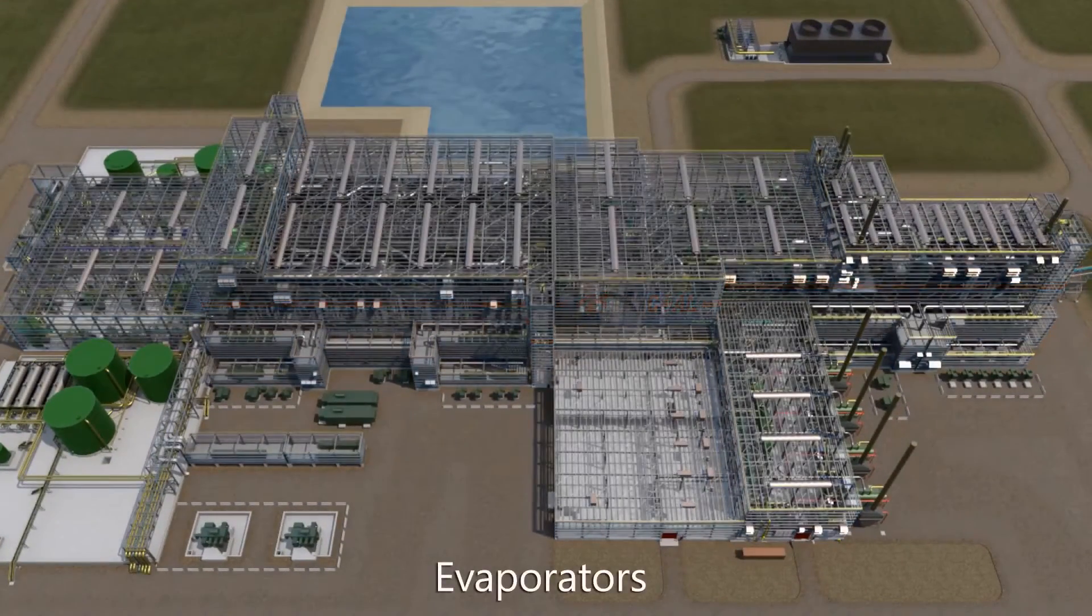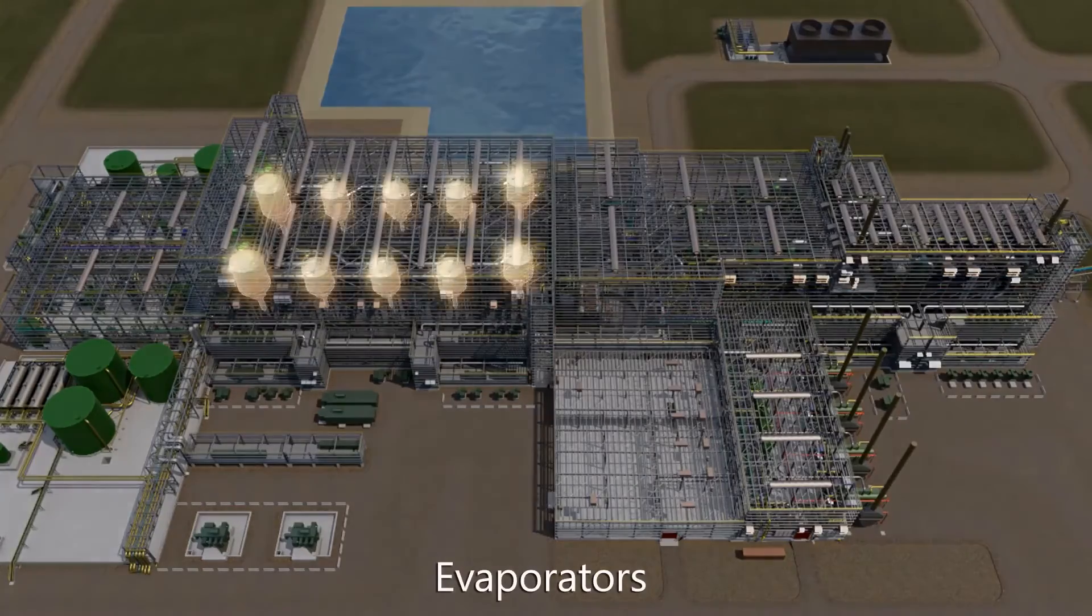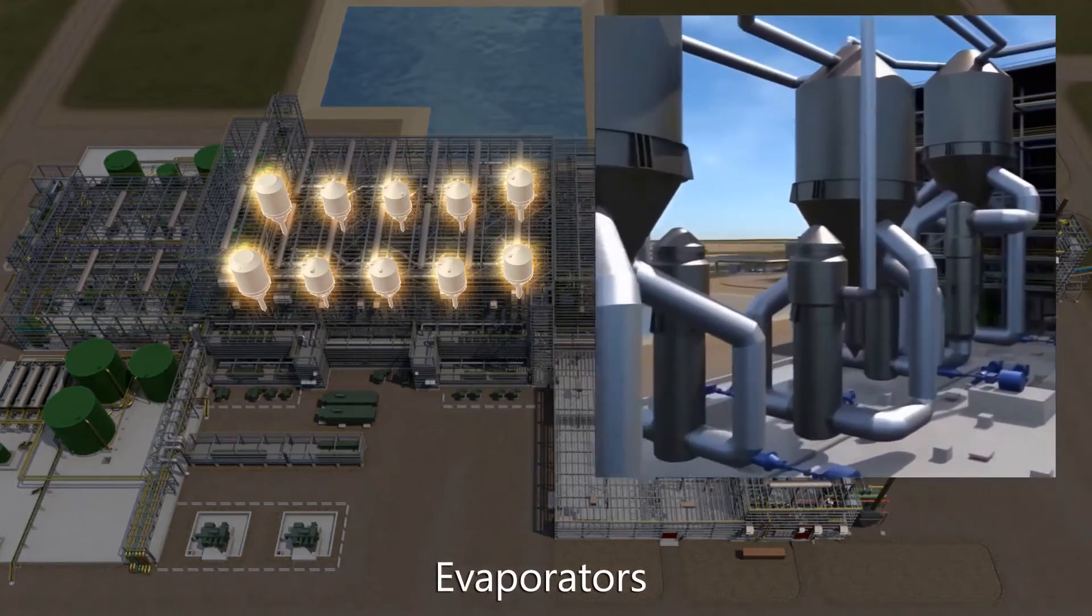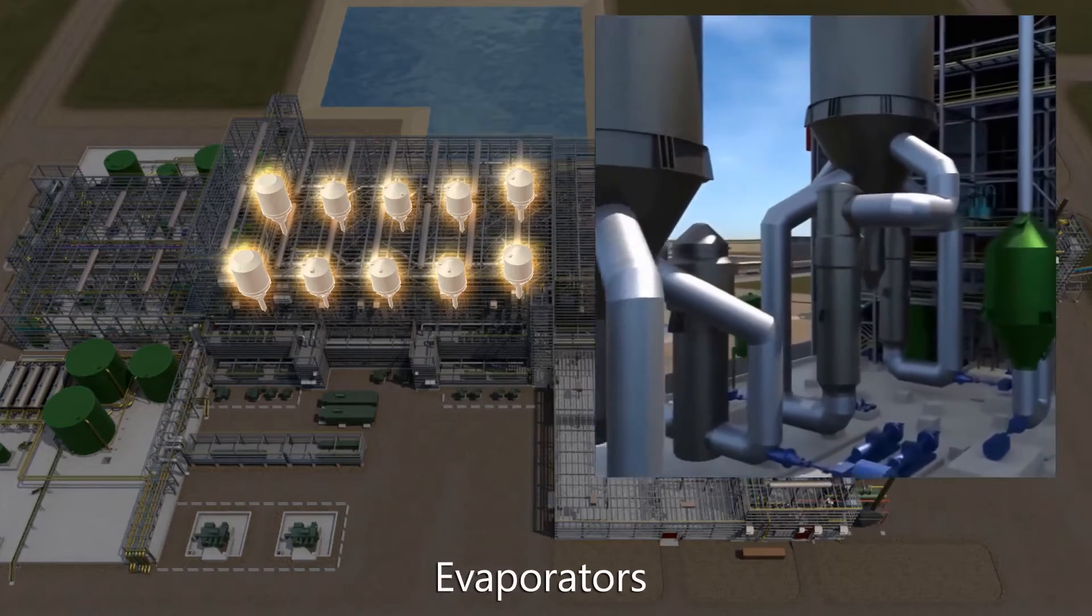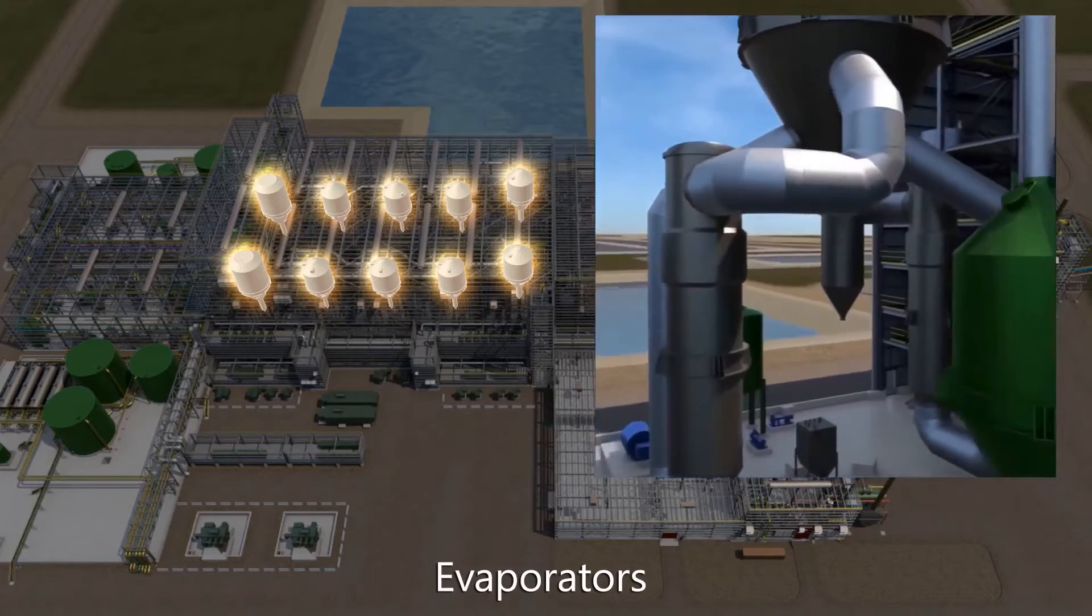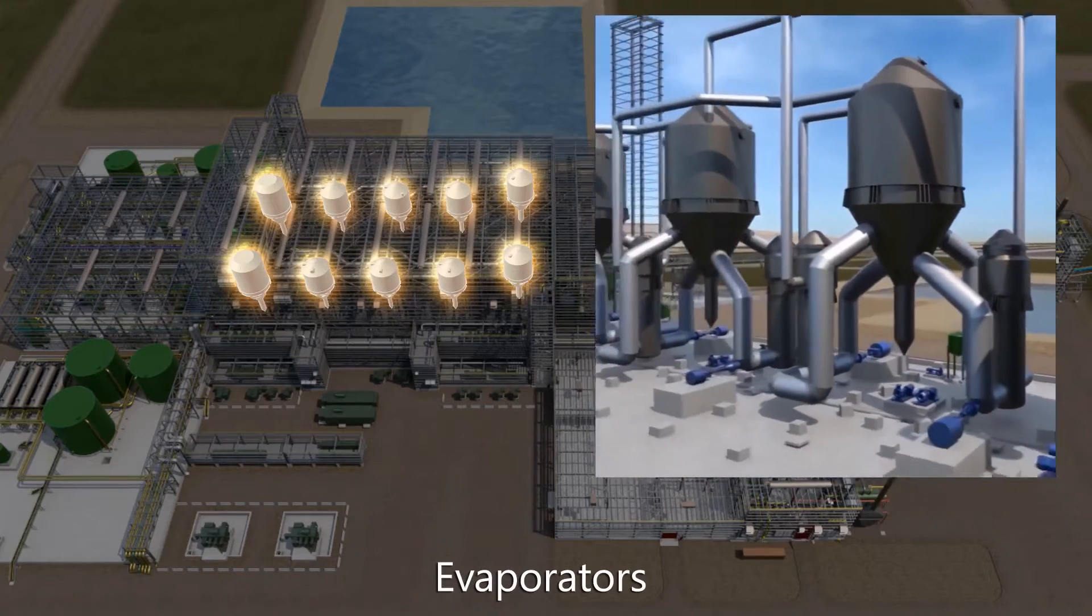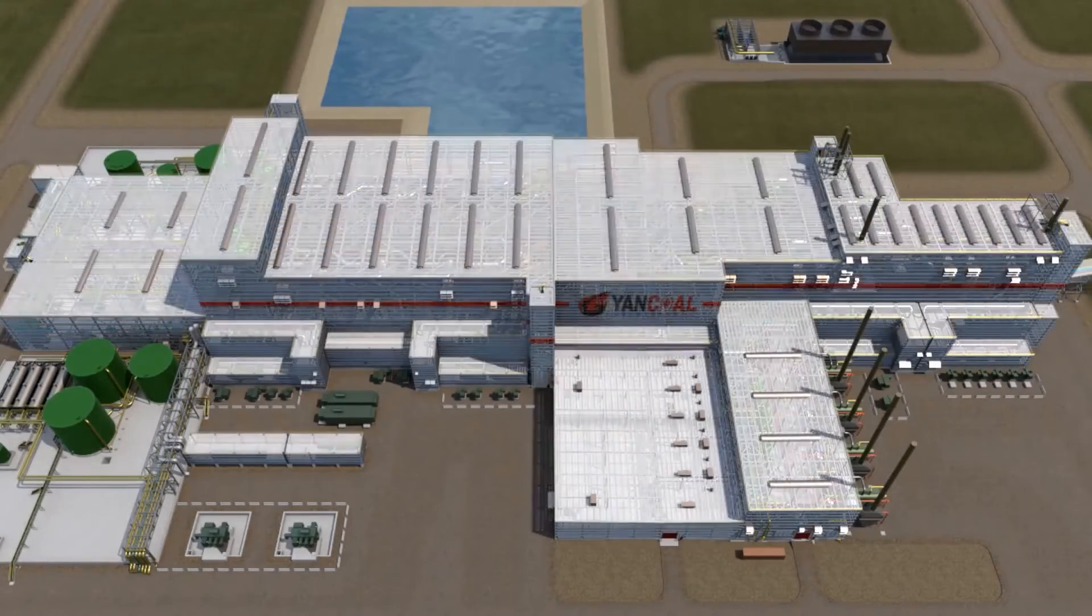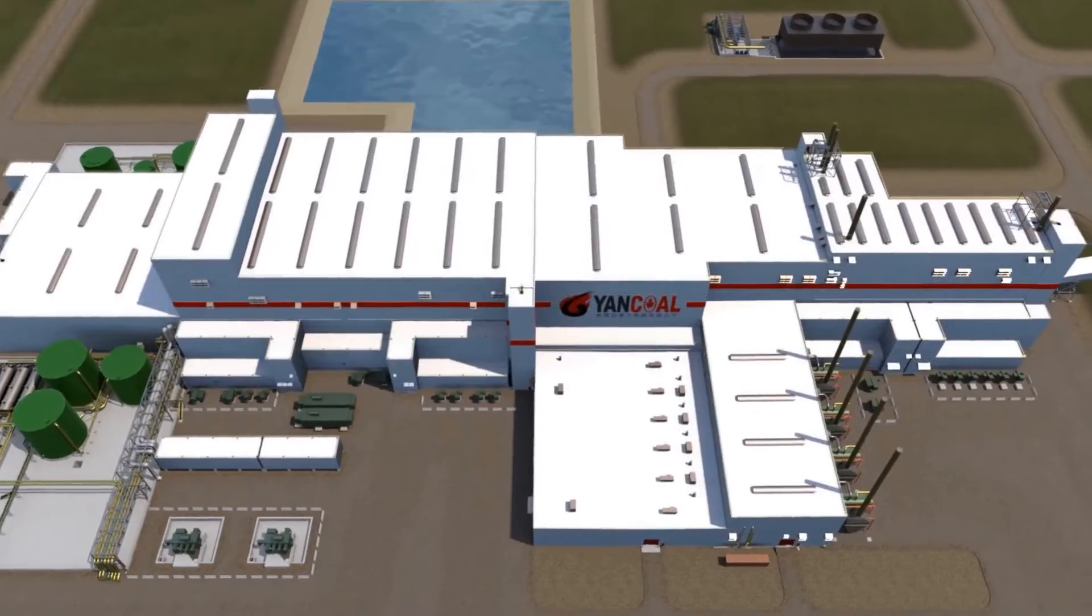The brine is processed using evaporation and crystallization. During the evaporation process, water is evaporated off, collected, and returned to the primary mining caverns. Recycling the hot water results in lower natural gas consumption and a 30% reduction in water consumption. During operation, the process will be optimized to limit the amount of water required.